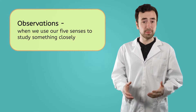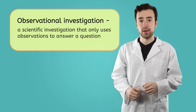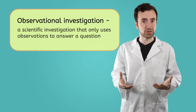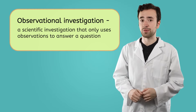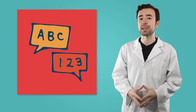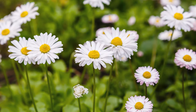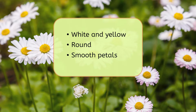We know that observations are when we use our five senses to study something closely. An observational investigation is a scientific investigation that only uses observations to answer a question. We can describe our observations using words or numbers, and both of these can help us answer different types of questions. Let's think back to my daisies — we could describe our observations of them with words, like saying they're white and yellow, they're round, or their petals are smooth.